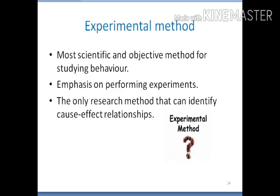The experimental method is considered the most scientific and objective method of studying behavior. It lays emphasis on performing experiments and is the only research method that can identify cause-effect relationships. In educational psychology, experiments are performed in the psychological laboratory, in the classroom, or outside the classroom in physical or social settings to study cause and effect regarding human behavior. All other methods simply describe what is happening.